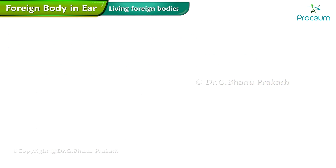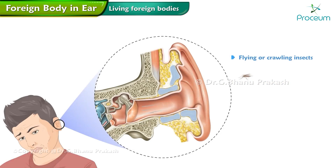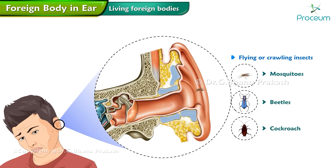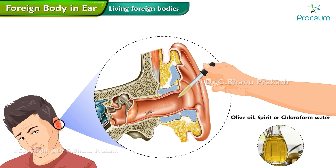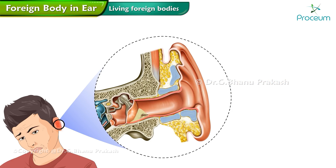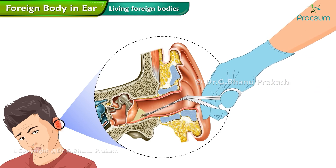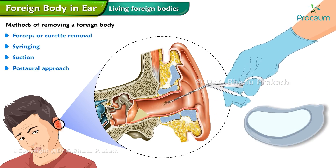Living foreign bodies: flying or crawling insects like mosquitoes, beetles, cockroach, or an ant may enter the ear canal, causing intense irritation and pain. No attempt should be made to catch them alive. First, the insect should be killed by instilling oil, spirit, or chloroform water. Once killed, the insect can be removed by any of the methods described above.